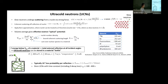The reflection rate off materials is given by velocity times the area of your walls divided by volume. You also have beta decay loss — the neutron mean lifetime is 880 seconds. Combining both losses, you can store ultracold neutrons for about 100 to 600 seconds total loss time.